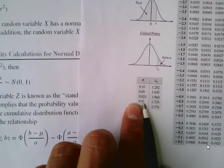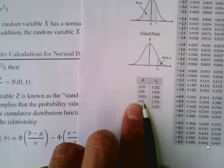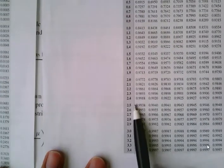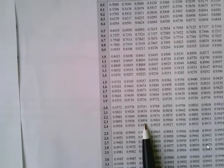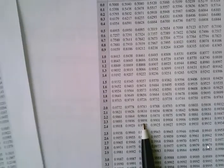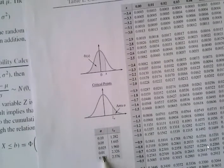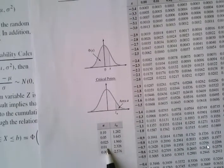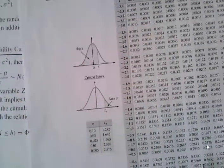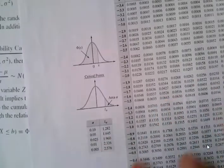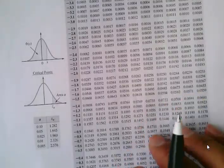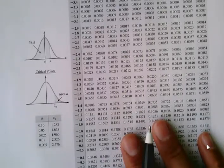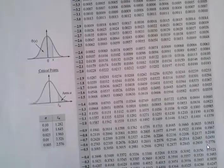Looking at 2.32 in the table, we get approximately 0.9898, so 2.326 makes sense as corresponding to 0.99, and that would be 1 minus this value. If we need information not listed in the table, we either give an approximation, do some estimation, or we compute the integral directly.